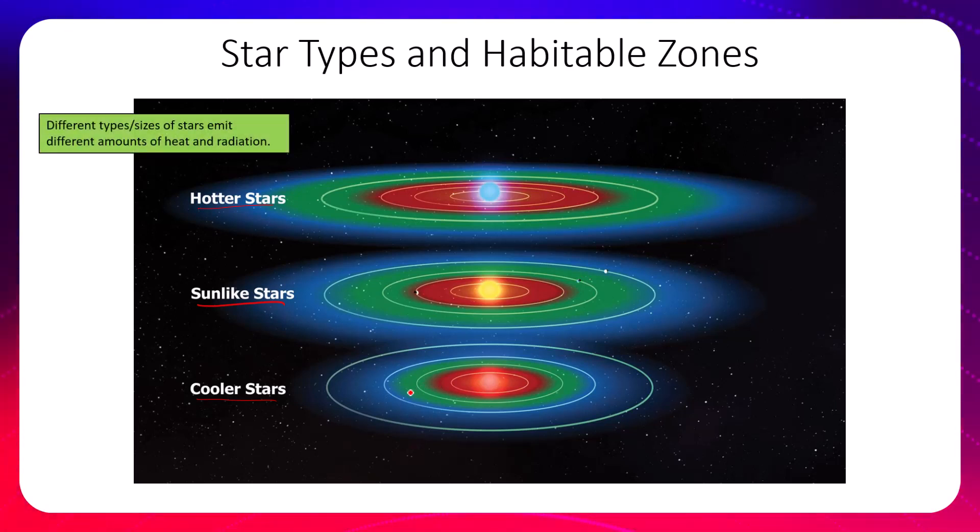Different types and sizes of stars emit different amounts of heat and radiation. It is really important for you to note that heat, the physical temperature heat, is not the only thing that a star is going to emit. It's actually going to emit ultraviolet radiation as well, and we know that our Sun in particular emits UV radiation because that's what gives rise to sunburns.